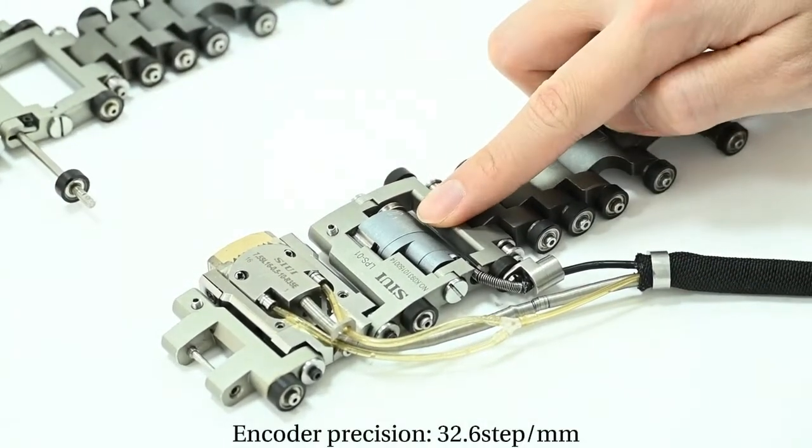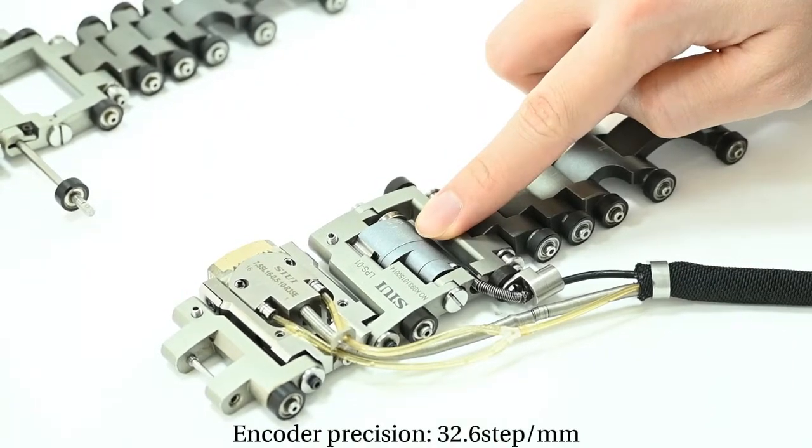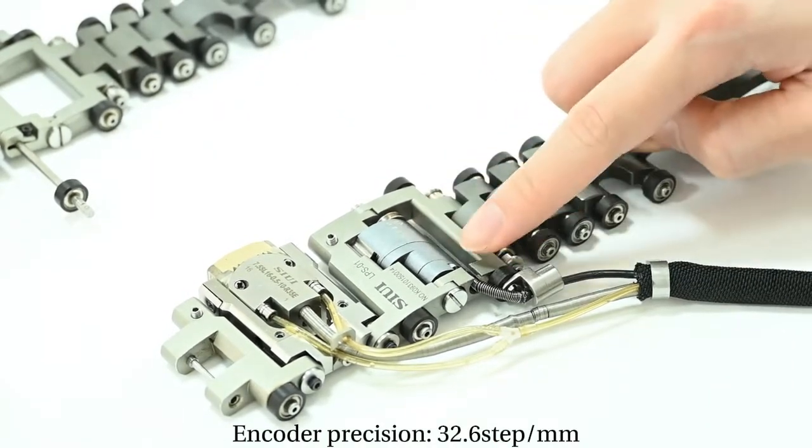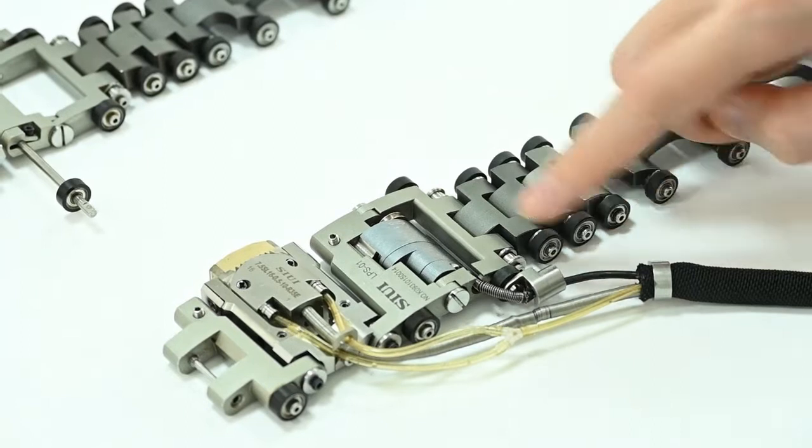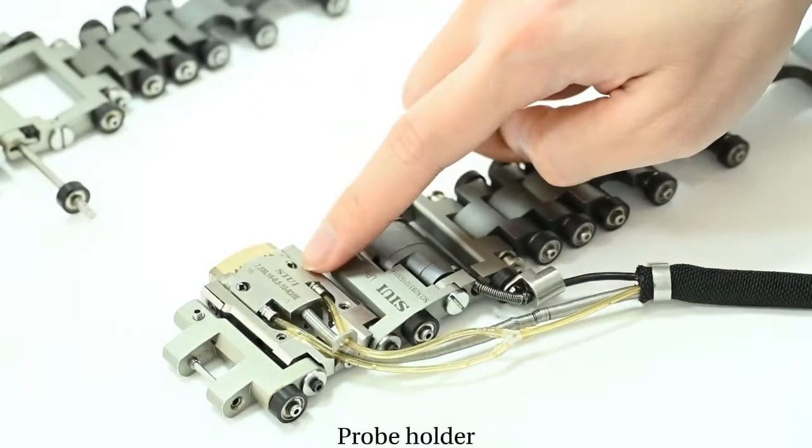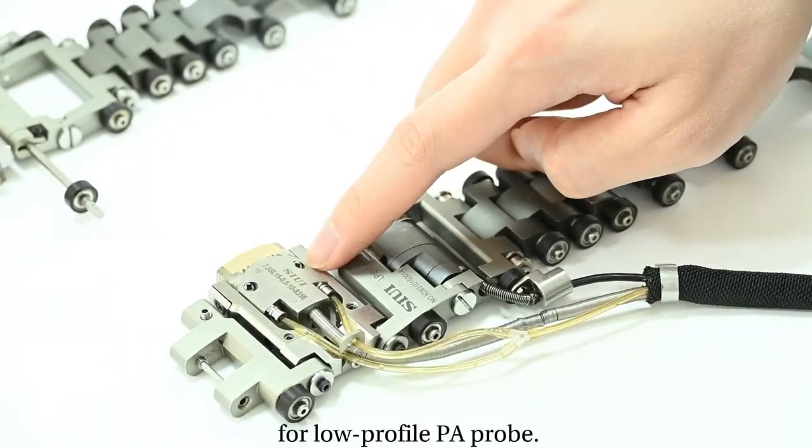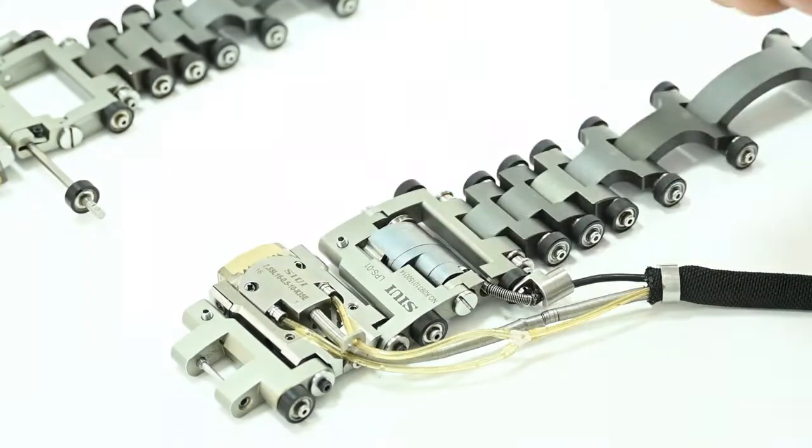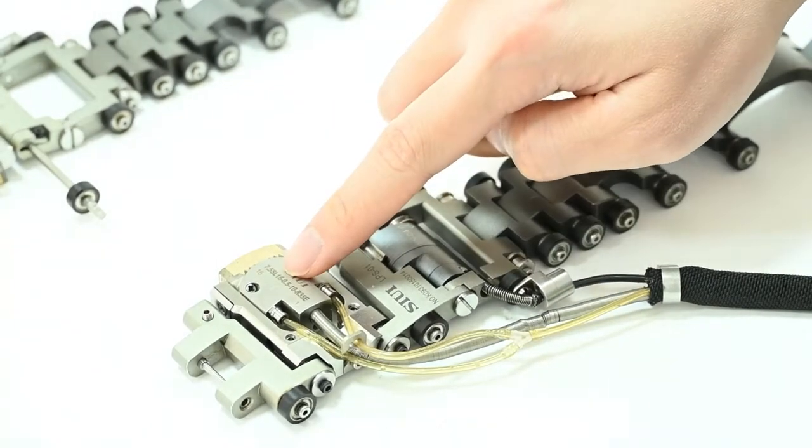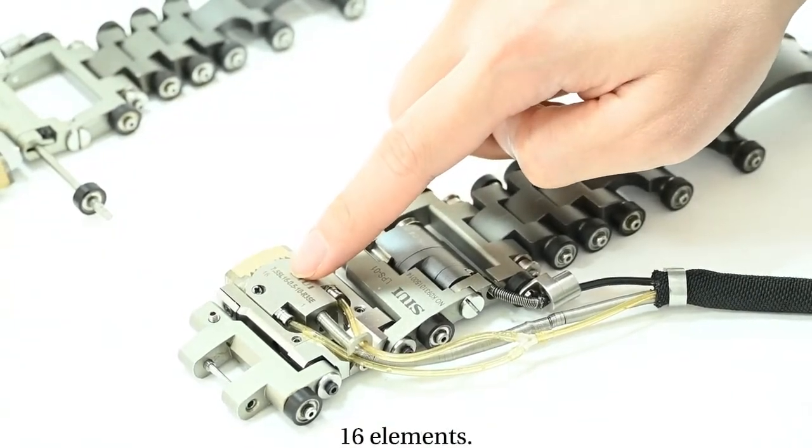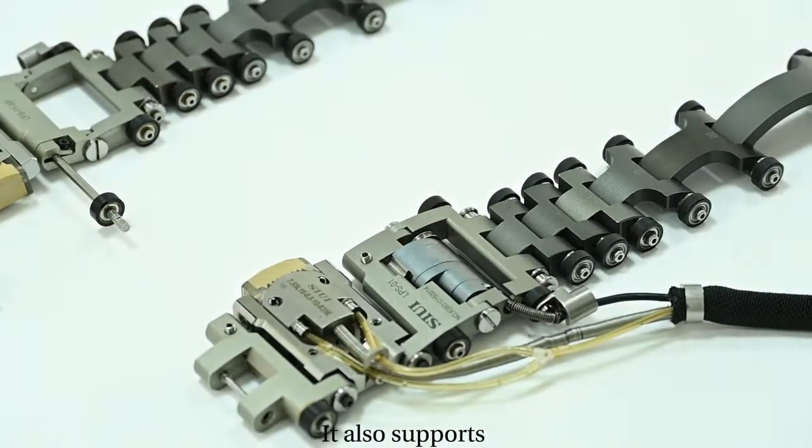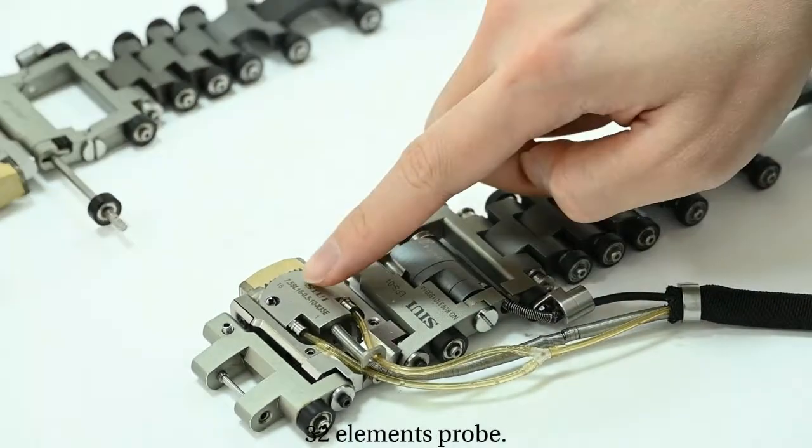Encoder with precision 32.6 steps per millimeter. Encoder cable. Probe holder for low profile phased array probe. What I show you here is a phased array probe with 16 elements. It also supports 32 element phased array probes.